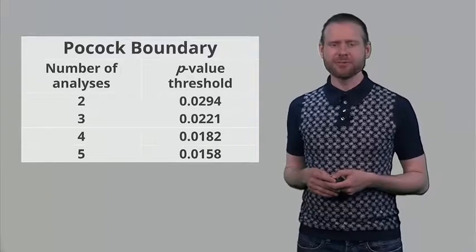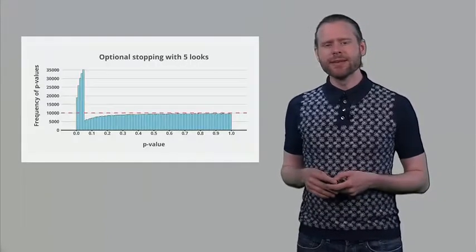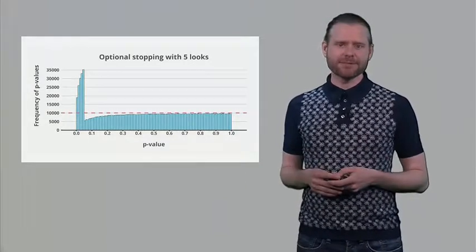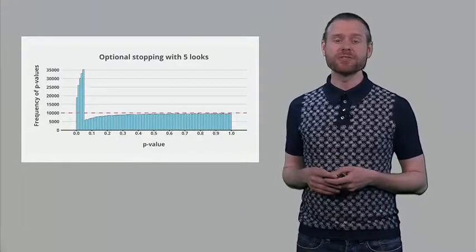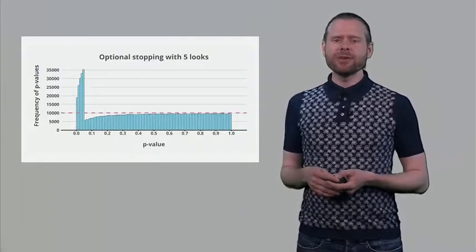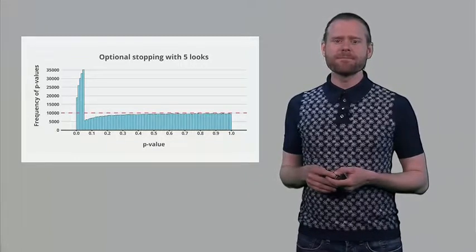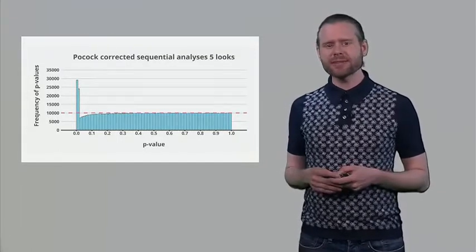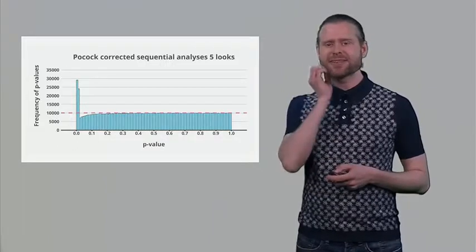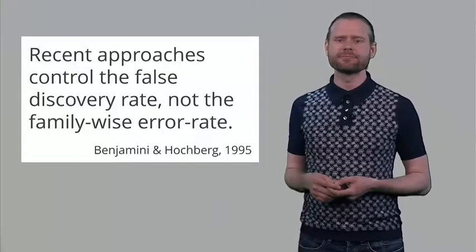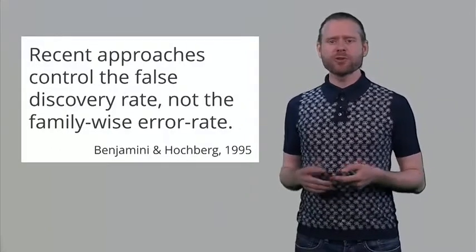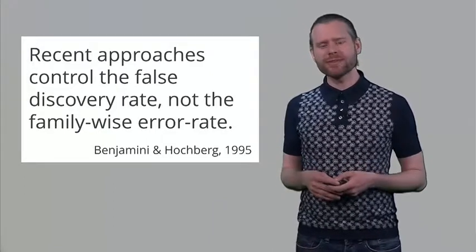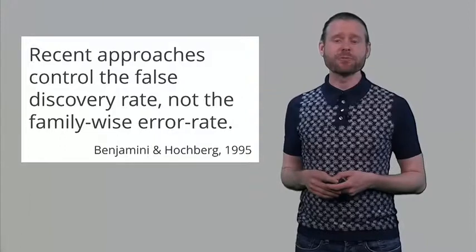The optional stopping p-value distribution showed an inflated error rate with too many p-values just below 0.05. Using corrected p-values based on the Pocock stopping rule, the distribution still looks a little peculiar, but the error rate is exactly 0.05. This approach controls errors for multiple comparisons using the Bonferroni approach or for sequential tests using the Pocock boundary.